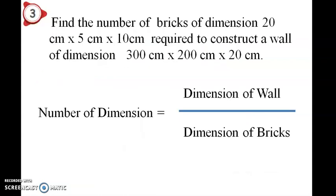Find the number of bricks of a dimension 20 centimeter by 2 centimeter. Record to consider wall dimensions there. Number of dimensions equal to dimension of wall divided by dimension of brick.